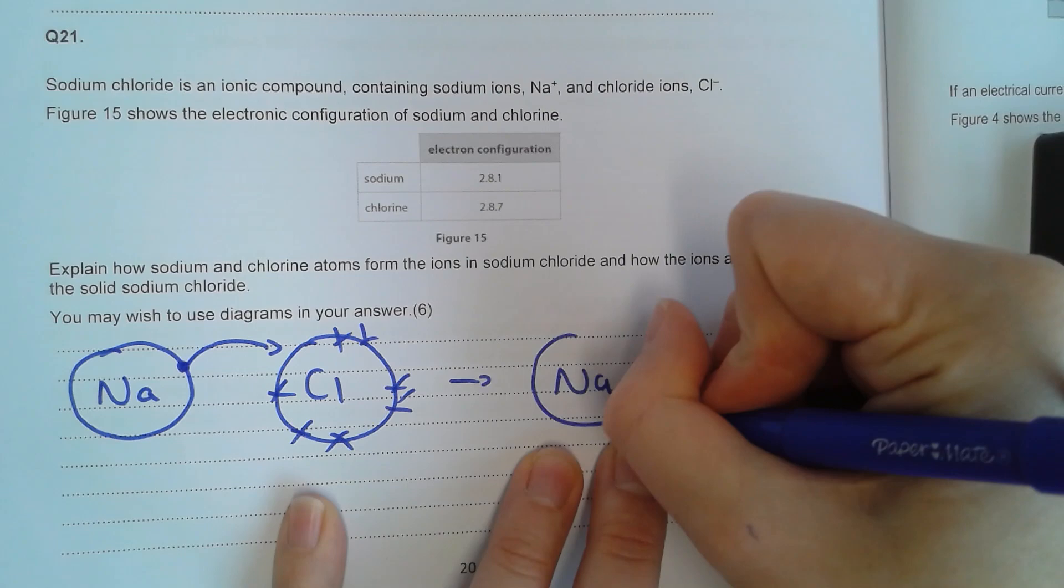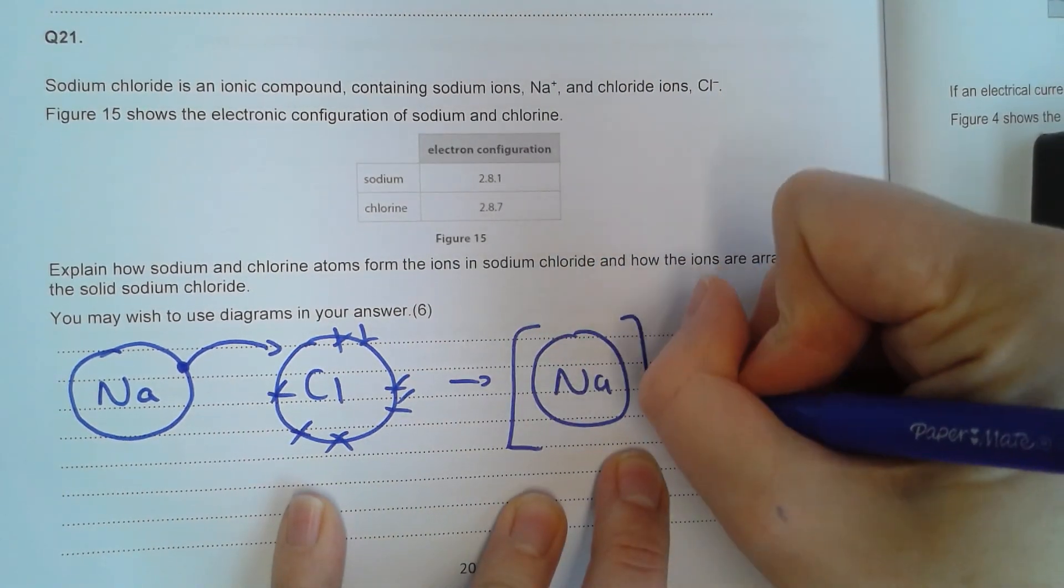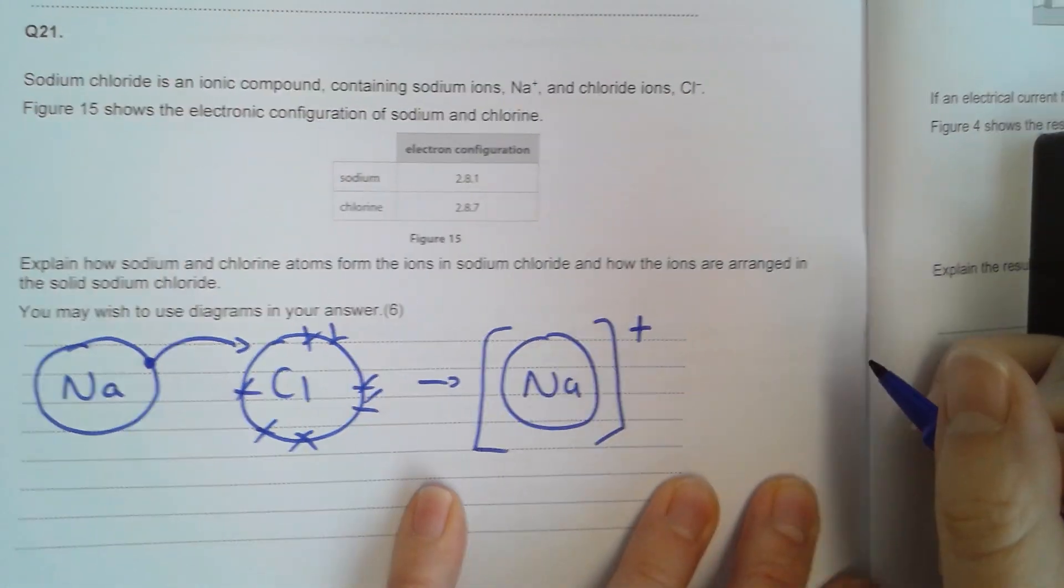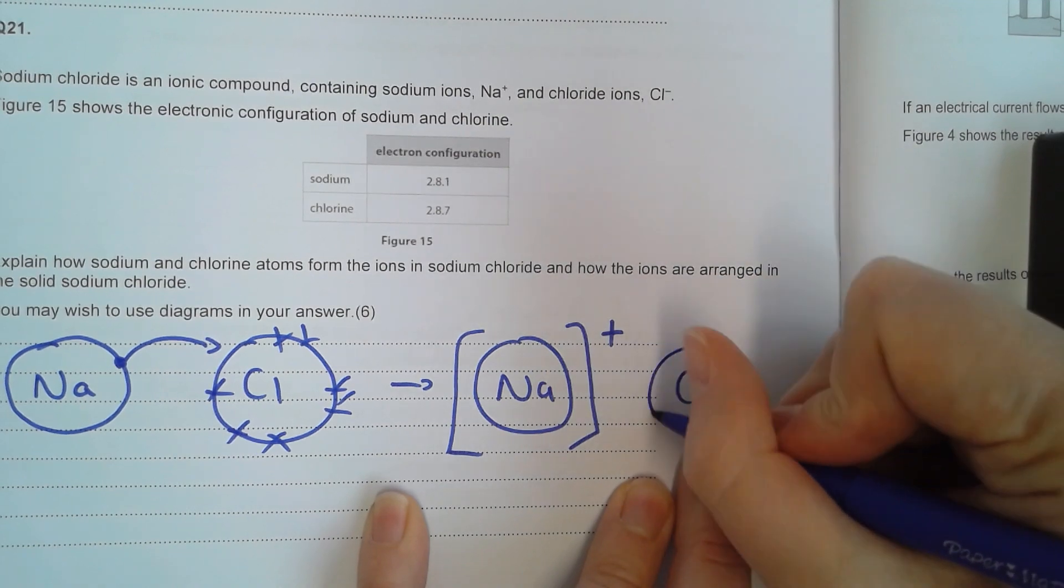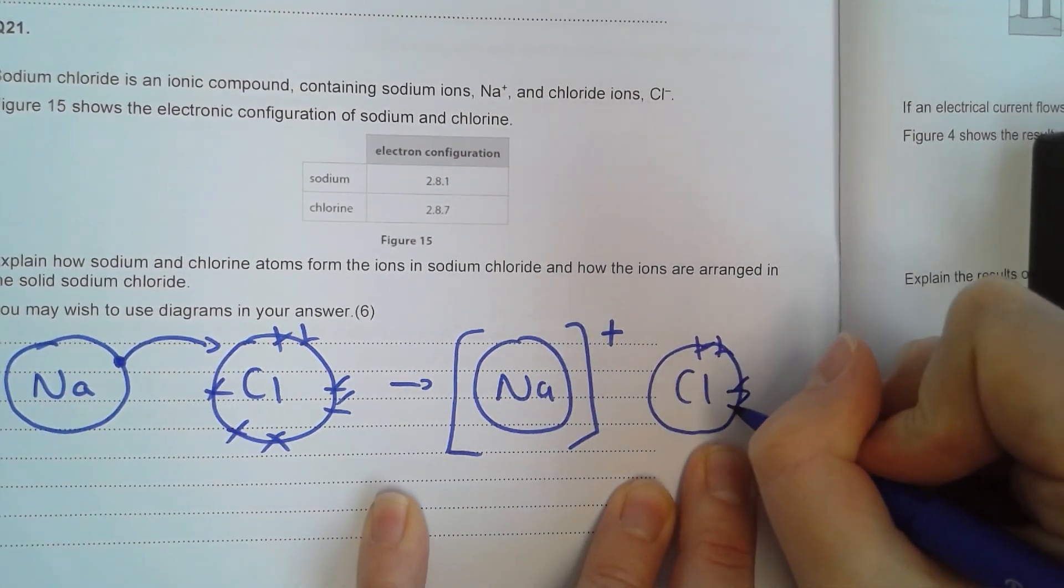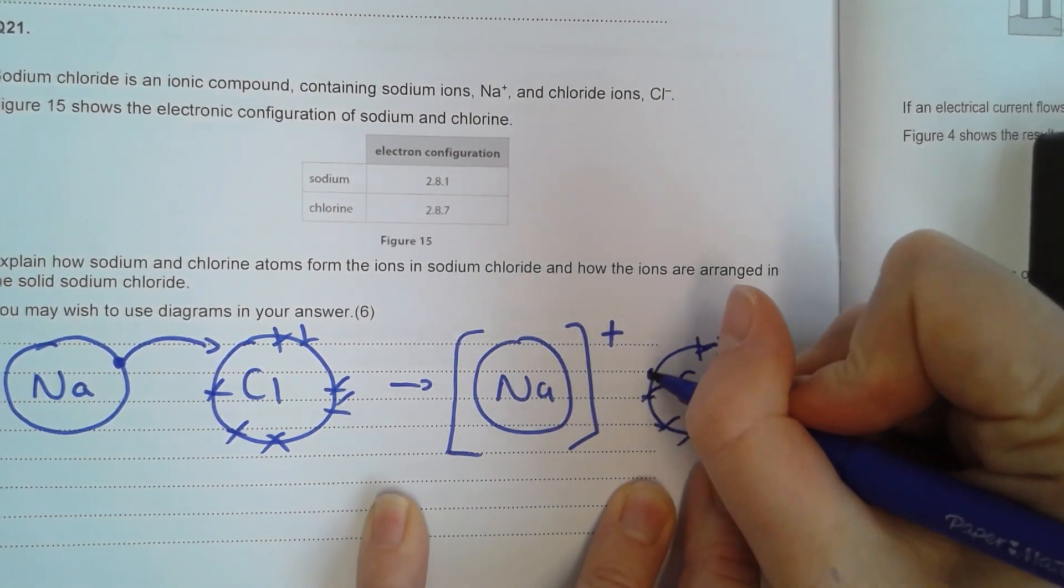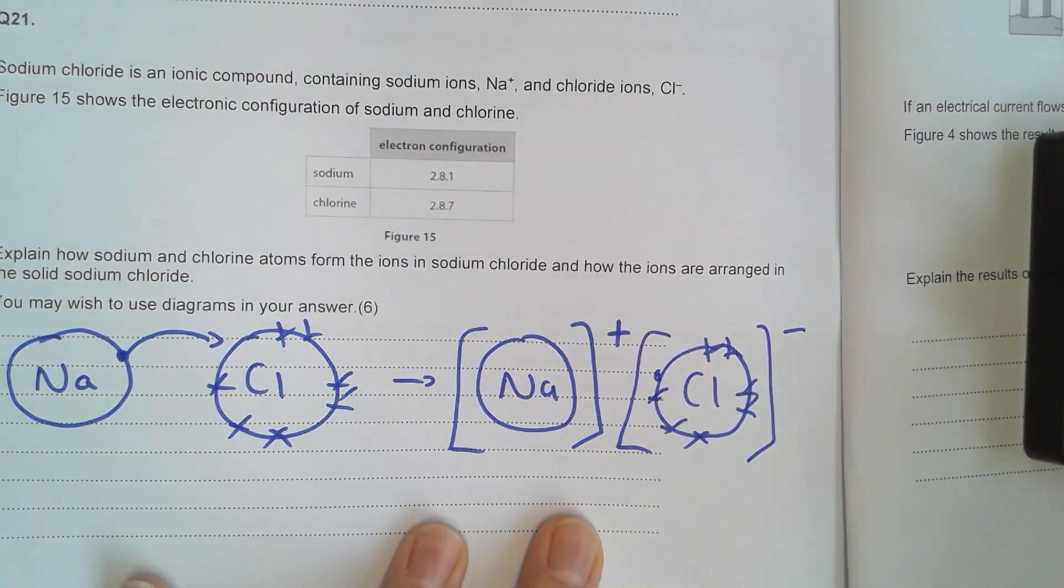Sodium is going to transfer one electron to chlorine. When it does so, sodium has the following with a positive charge. And then chlorine looks like this. With a negative charge.